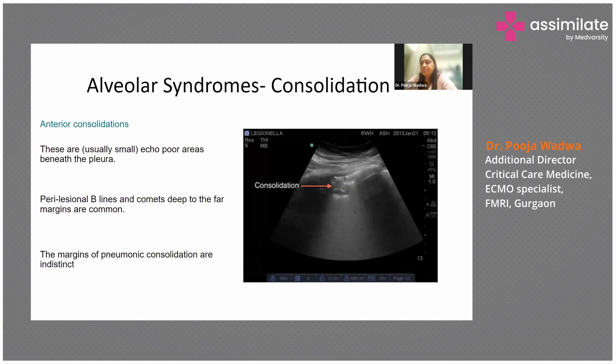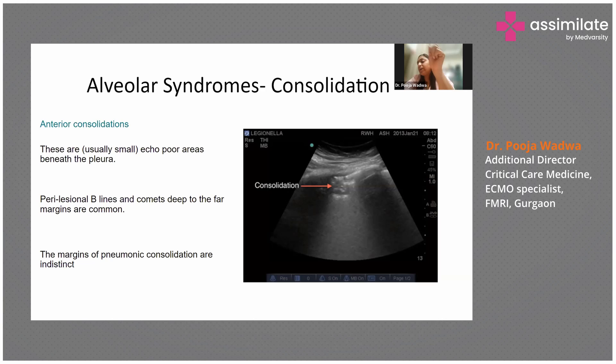In consolidation with air bronchogram, you usually see echo-poor areas beneath the pleura. You can appreciate the white pleural line, perilesional B-lines or comets at the far margins, and distinctly visible compact margins. These white areas along with some air represent consolidation.